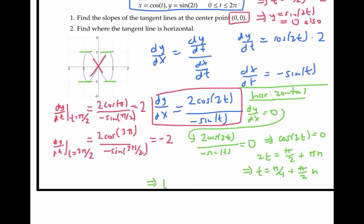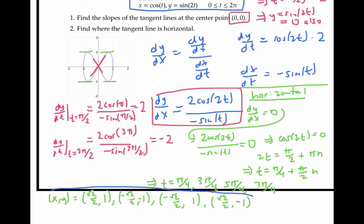And those are π/4, 3π/4, 5π/4, and 7π/4. We can find the x and y coordinates of these points simply by plugging in these values of t into our original equations. Here are the xy coordinates of those four points.